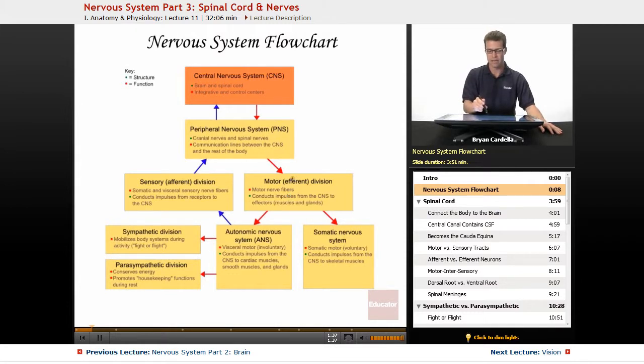And another way you can remember it is that the end goal of an efferent signal is the effector, which starts with the same beginning there. Whatever is being effected, a muscle, a gland, an organ by that motor signal.